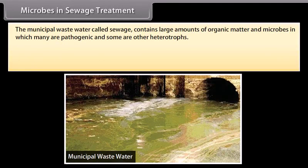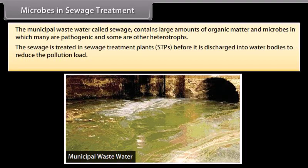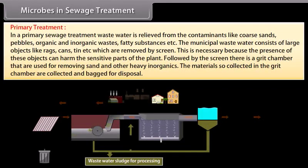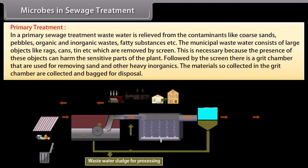Microbes in sewage treatment. The municipal wastewater called sewage contains large amounts of organic matter and microbes, many of which are pathogenic, and some are other heterotrophs. The sewage is treated in sewage treatment plants (STPs) before it is discharged into water bodies to reduce the pollution load. The treatment involves two steps: primary treatment and secondary treatment. In primary sewage treatment, wastewater is relieved from contaminants like coarse sands, pebbles, organic and inorganic wastes, fatty substances, etc.